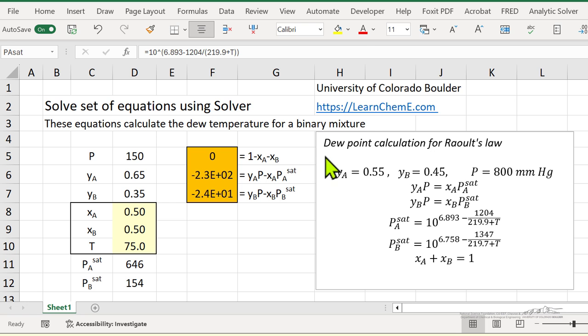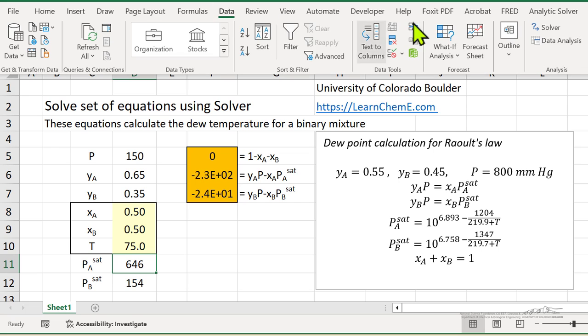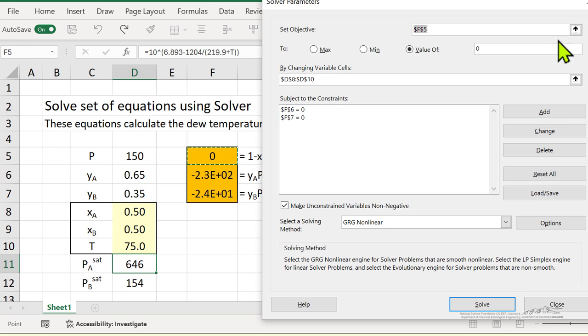So here's the spreadsheet, and what we're going to do is data, and solver, and you can see it says we're going to set F5, the value of zero, that's objective.